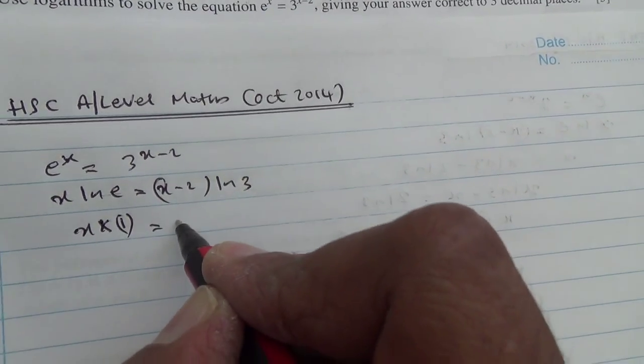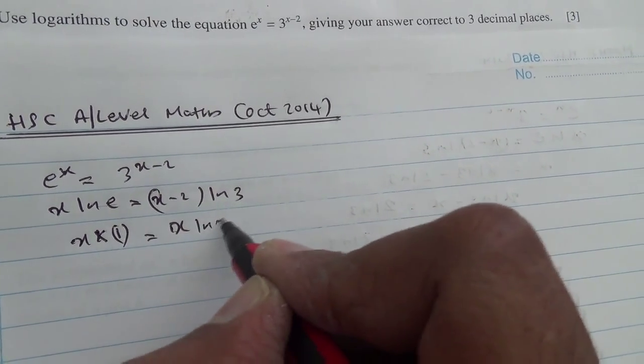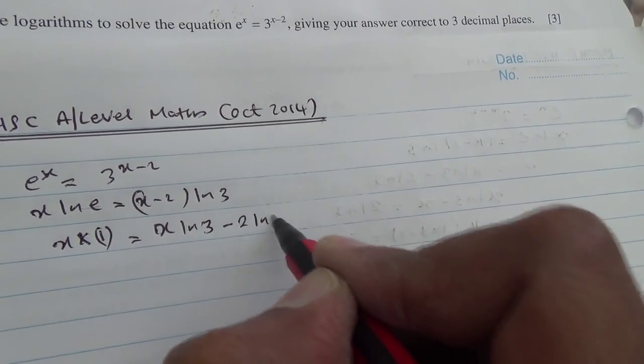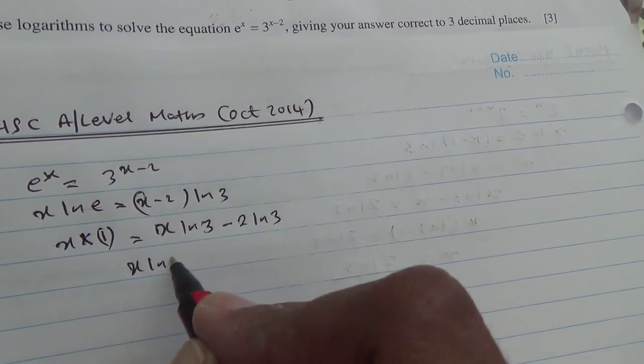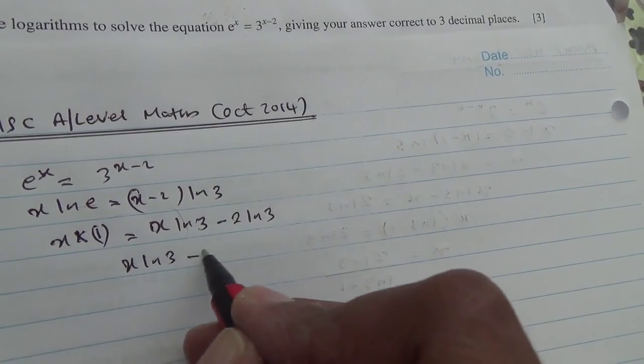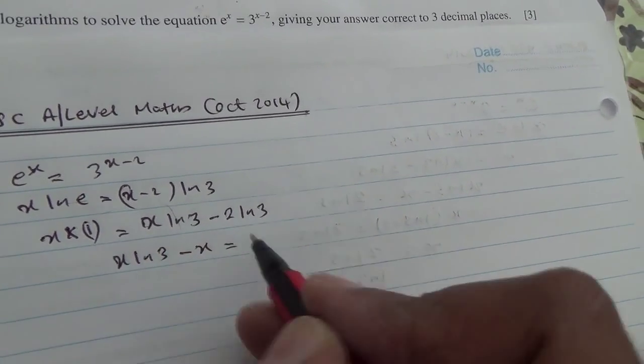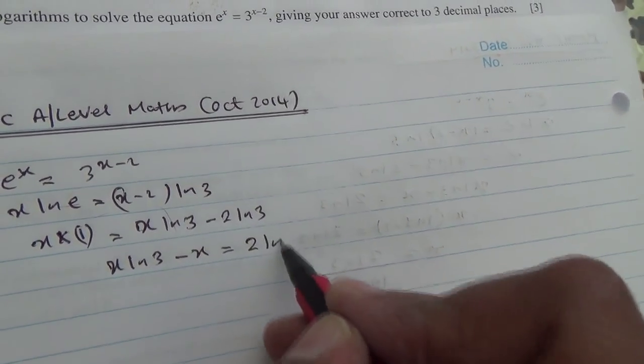Alright, so ln 3 times x is x times ln 3 minus 2 ln 3. Okay, so x ln 3 minus x is equal to, send this on the other side, becomes 2 ln 3.